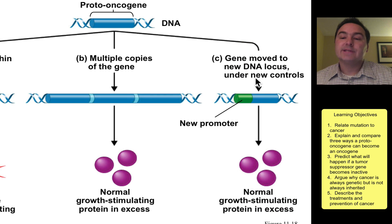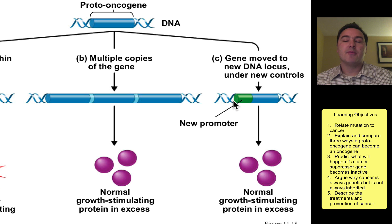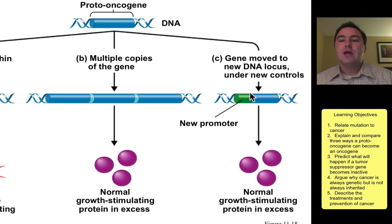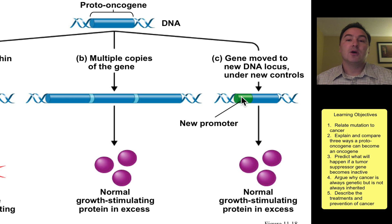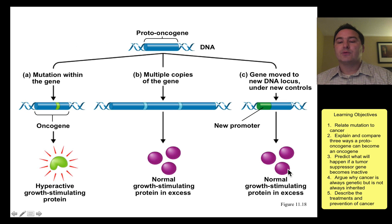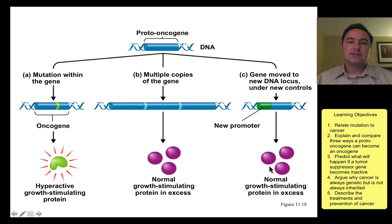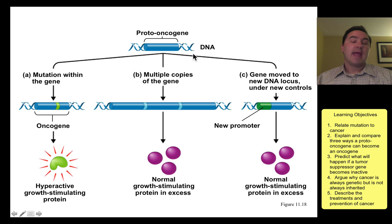Another potential model is that perhaps you have a mutation on the promoter region of the gene. The promoter region is the region that turns the gene on or turns the gene off. If you have a mutation here, one possible outcome could be that the gene gets turned on again, and so the final result is excess growth-stimulating protein. That's one type of gene that we call a possible cancer-causing gene, or proto-oncogene — proto means before, and oncogene refers to the cancer.